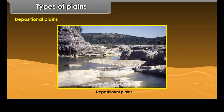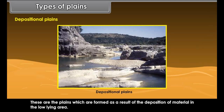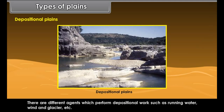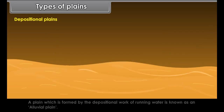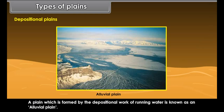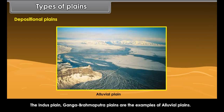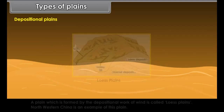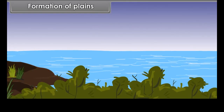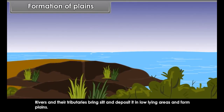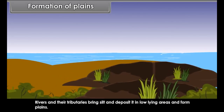Depositional plains are formed as a result of deposition of material in low-lying areas. Different agents perform depositional work, such as running water, wind, and glaciers. A plain formed by the depositional work of running water is known as an alluvial plain; the Indus Plain and Ganga-Brahmaputra Plains are examples. A plain formed by the depositional work of wind is called a loess plain; northwestern China is an example.